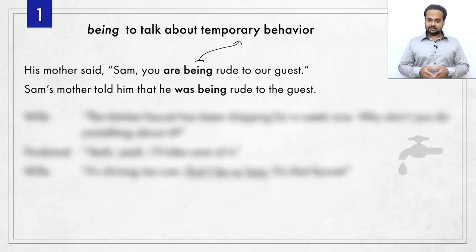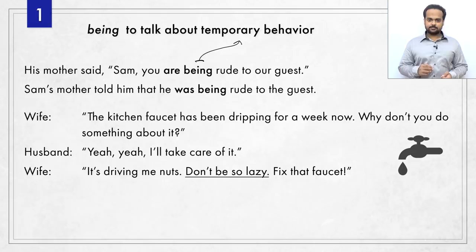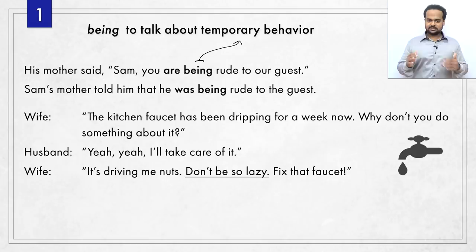Here's another example — a conversation between a husband and wife. The wife says: the kitchen faucet has been dripping for a week now. Why don't you do something about it? Dripping means water is falling in drops, usually making an annoying, unpleasant sound. The husband says he'll take care of it. The wife responds: it's driving me nuts — meaning it's really irritating, I'm going mad because of it. Don't be so lazy. Fix that faucet.